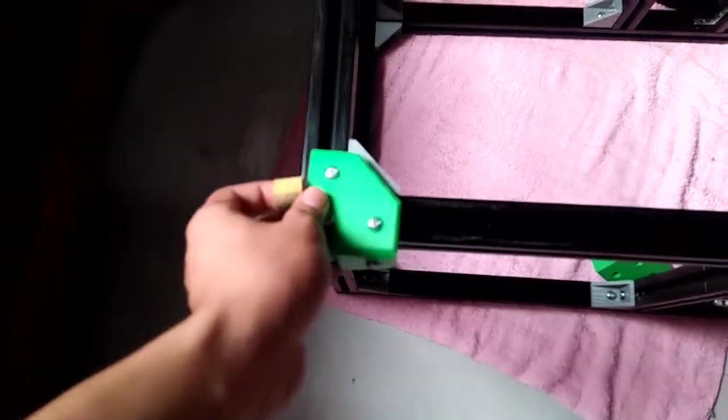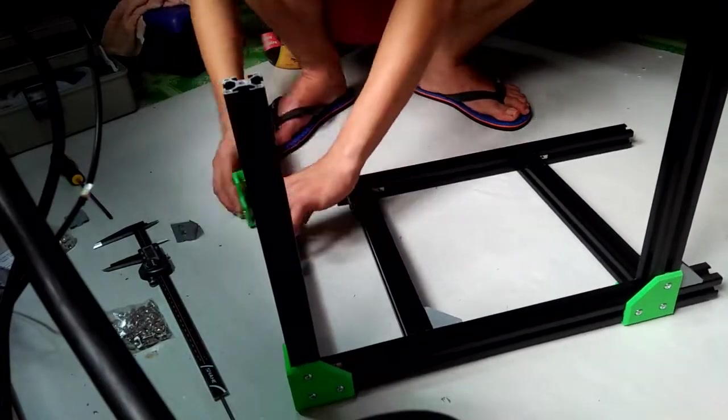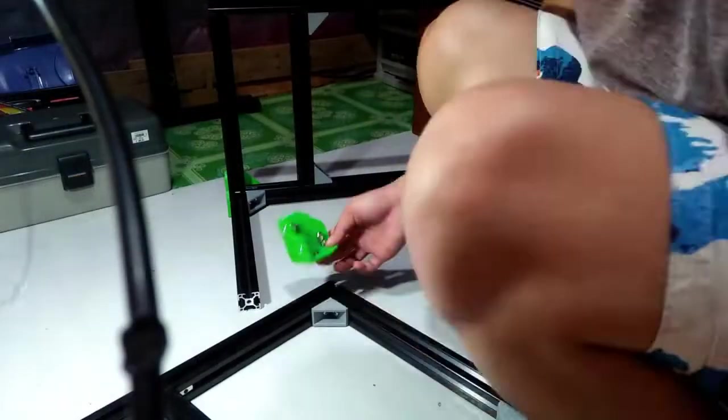considering I only had one 3D printer at that time. Green is the primary color I used because this was inspired by our final project during college. So I found it cool, so I decided to use green on the 3D printer in combination with the black aluminum frame.